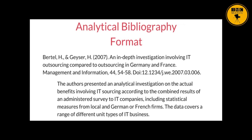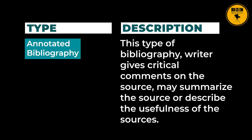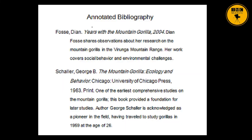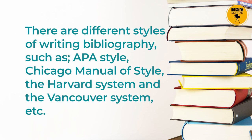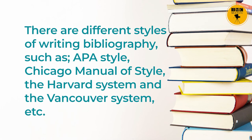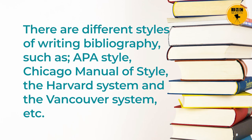You can see an example of analytical bibliography on screen. The third type is annotated bibliography, where the writer gives critical comments on the source, may summarize the source, or describe the usefulness of the source. Further, there are different styles of writing bibliography such as APA style, Chicago Manual of Style, the Harvard system, and the Vancouver system. Bibliography is a must for authentic work and is an essential part of any written work.